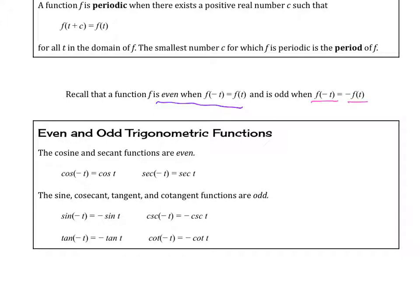It's odd if you plug in a negative and it becomes the opposite sign for the entire function. You need to know that cosine and secant functions are even. We can also think about that by way of the graph, which is symmetrical across the y-axis, reminding us that it is an even function, just like a quadratic.